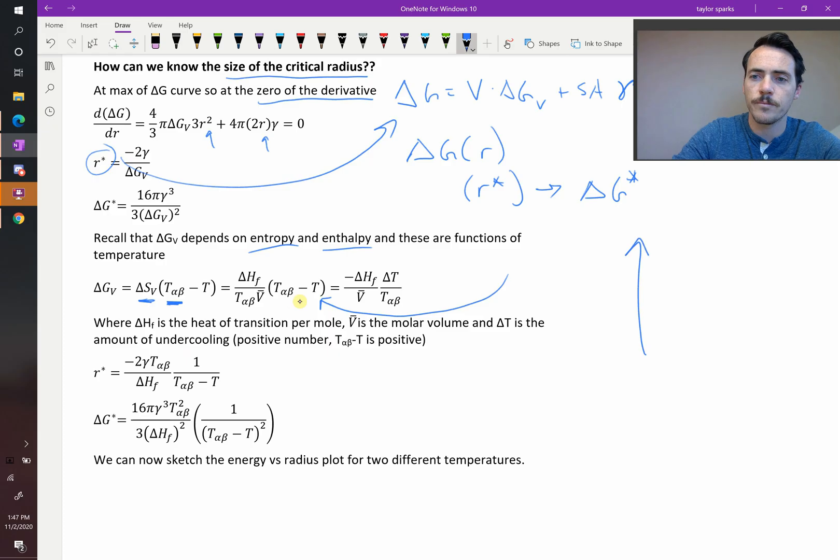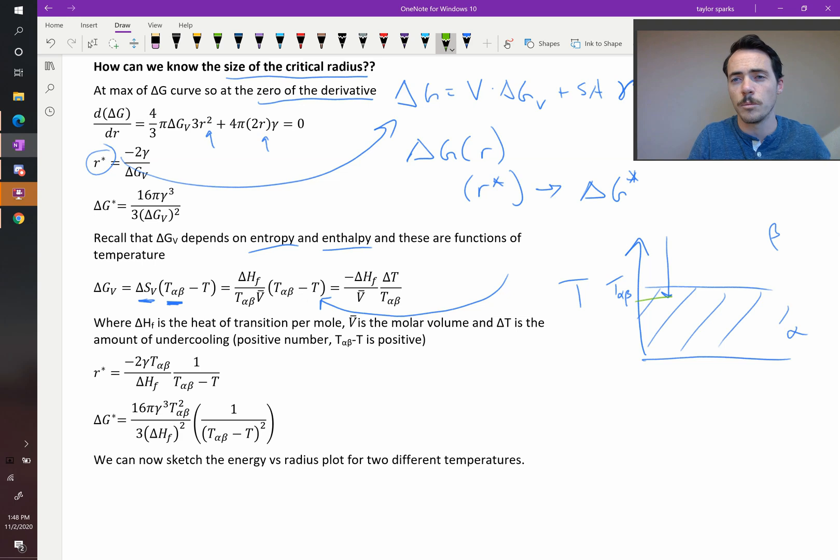So if we plotted this against temperature, there exists this temperature, T alpha beta. And as we go below that, in this region down here, you would expect it to be the alpha phase instead of the beta phase. But what we find is that it might actually have to go a little bit below it before that to actually occur because of this surface area component.